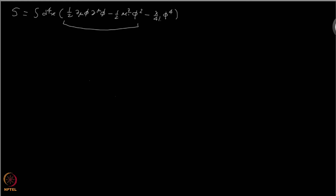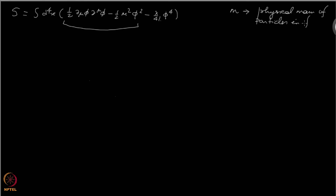I would also like to emphasize the fact that when we were studying free theory, this parameter m turned out to be the mass of physical particles in the theory. So m was the physical mass of particles in free theory.